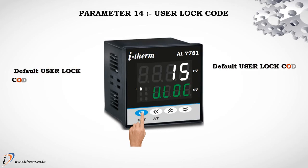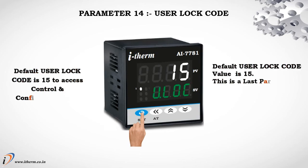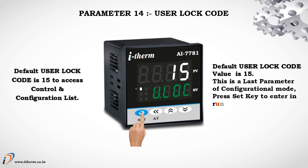Parameter 14 is User Lock Code. The default user lock code is 15 to access the control and configuration list. This is the last parameter of configurational mode. Press the Set key to enter in run mode.